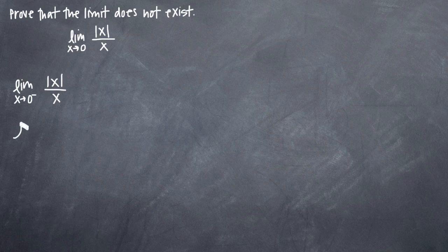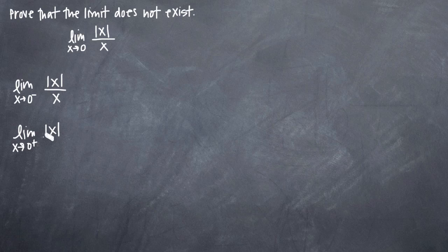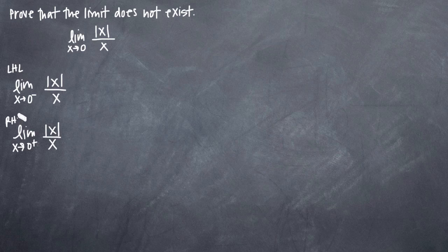We'll also go ahead and write the limit as x approaches zero from the positive or right-hand side of the absolute value of x divided by x. We'll call this the left-hand limit and this the right-hand limit.